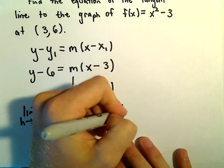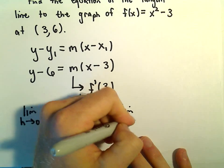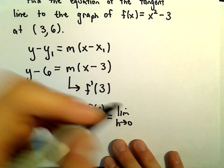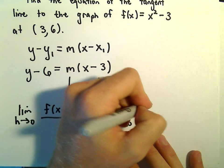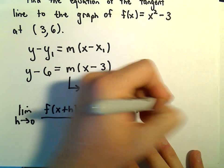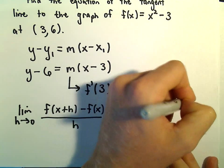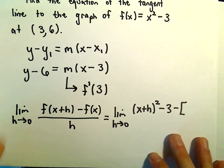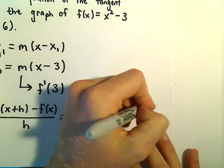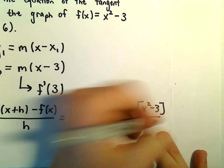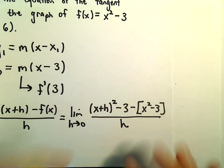So that's going to give us the limit as h approaches 0. Replace all the x's with x plus h. So we would have x plus h squared minus 3. And then we would have to subtract away the original function, which would just be x squared minus 3.